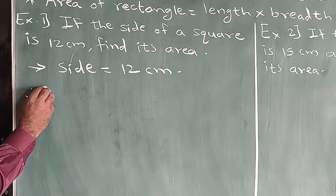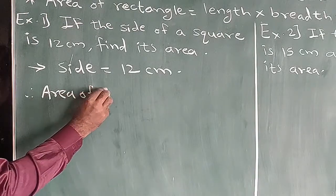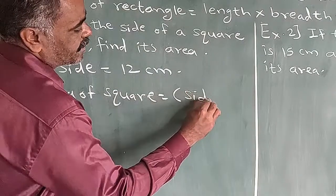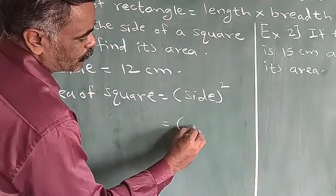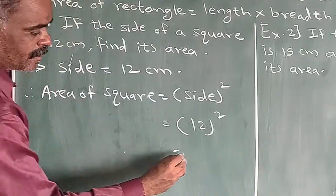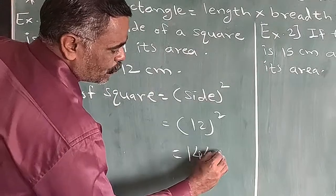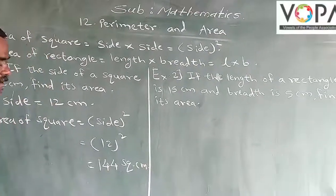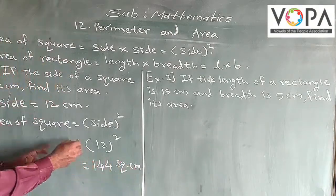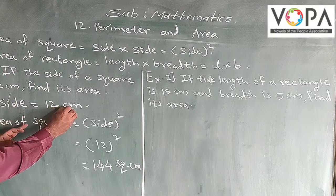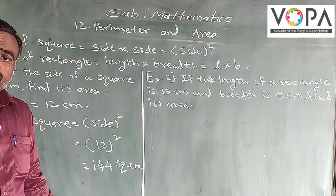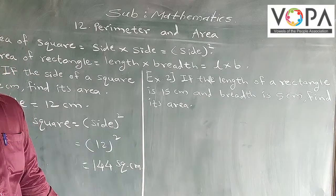And therefore, applying the formula, area of square is equal to side squared, which is equal to 12 squared, which is equal to 144 sq cm. Here the unit is square cm because the length of the side is given in cm, and we should calculate the area in square cm, square meter, or square kilometer.